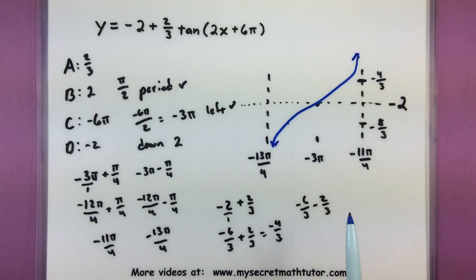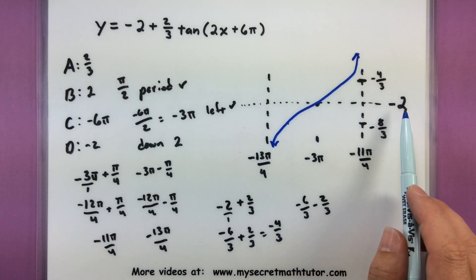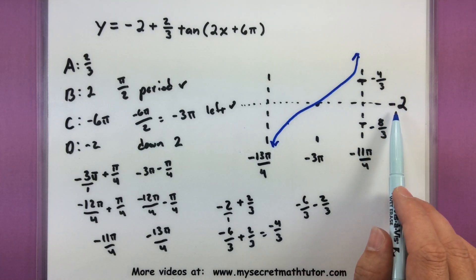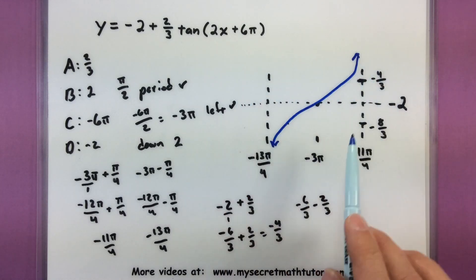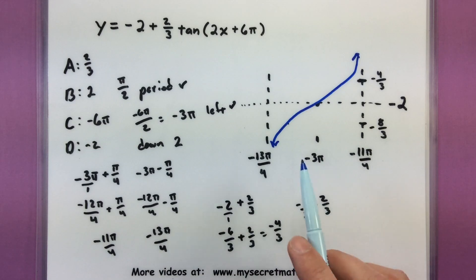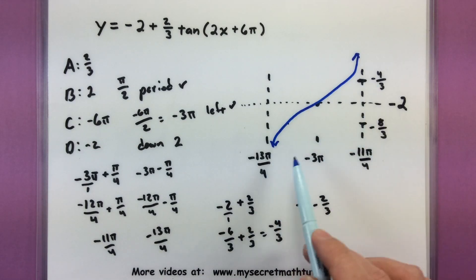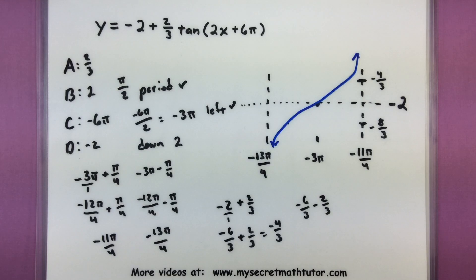If you wanted to graph out your axes, keep in mind our scale. This is way down at negative 2, so our x-axis is actually way up here and our y-axis is way over here. In fact, we might draw out a few more periods of this just to see where it lines up with that y-axis. Alright, not bad. Let's do one more difficult example and we'll call it good.